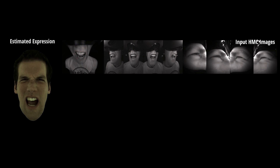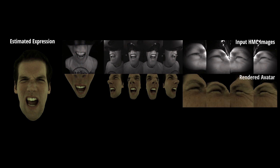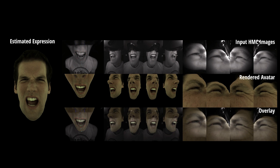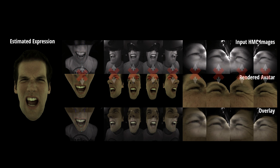We use the idea of an analysis-by-synthesis approach, estimating facial expression and headset position from input images. If our estimation is correct, the rendered avatar should align with input images in every view. However, because of the large domain gap, we cannot directly compare them.